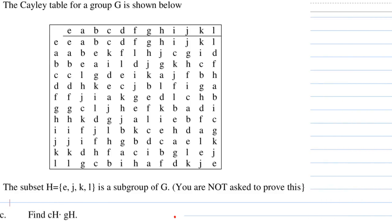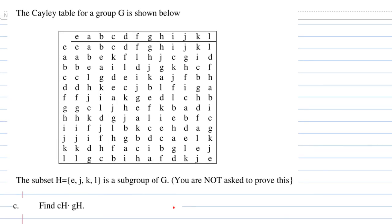Hi, for this recording I'm going to show you how to find the product of cosets. Given a Cayley table for G and subgroup H, we're going to find the product of cH and gH.